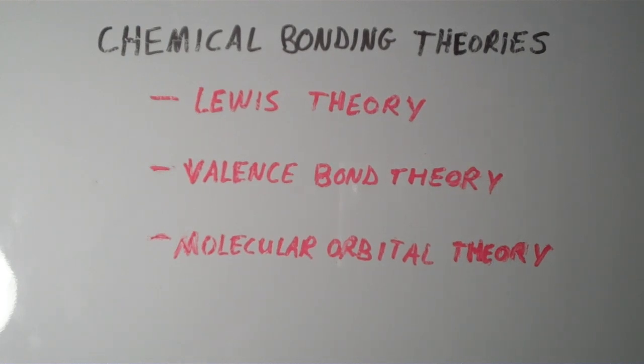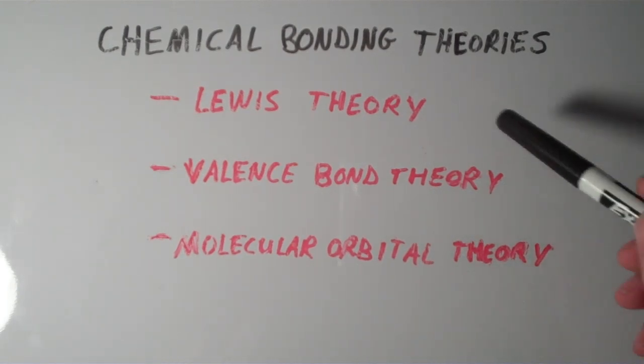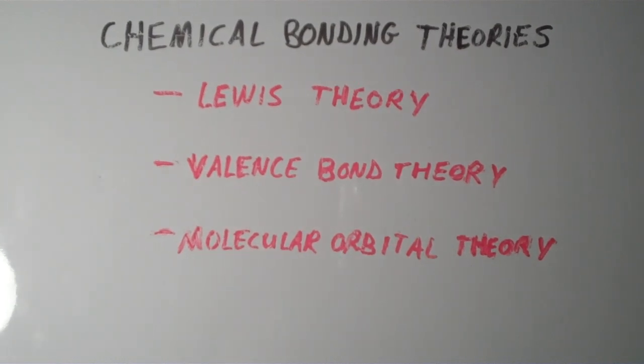These theories, all three of them have similarities and differences with one another, and we'll talk about those differences a little later, but these are the main three theories. But for now, what I'd like to do is start by talking about the reason why chemical bonds form in general. So basically I'm going to go over some underlying information that basically encompasses all three of these different chemical bonding theories.